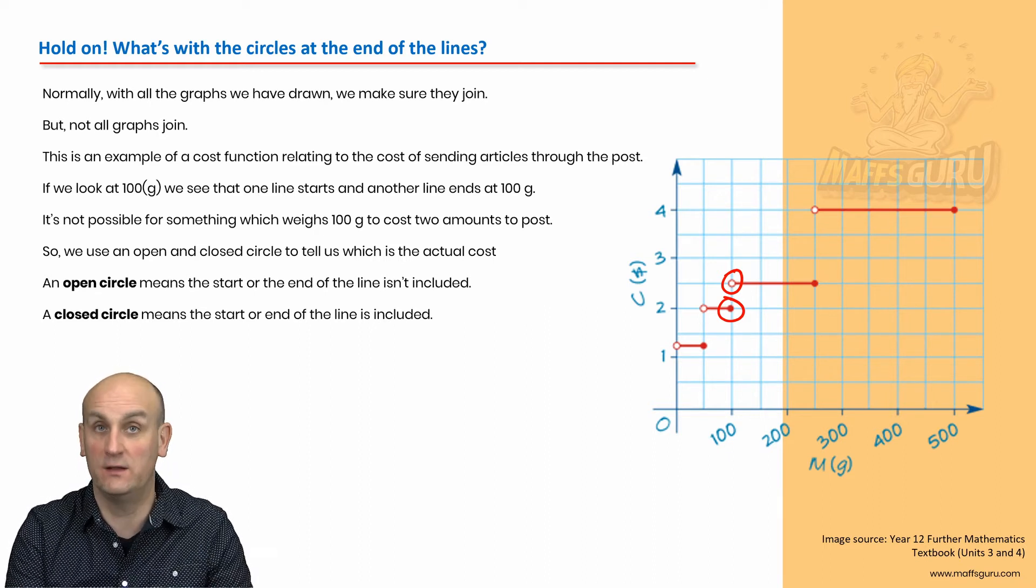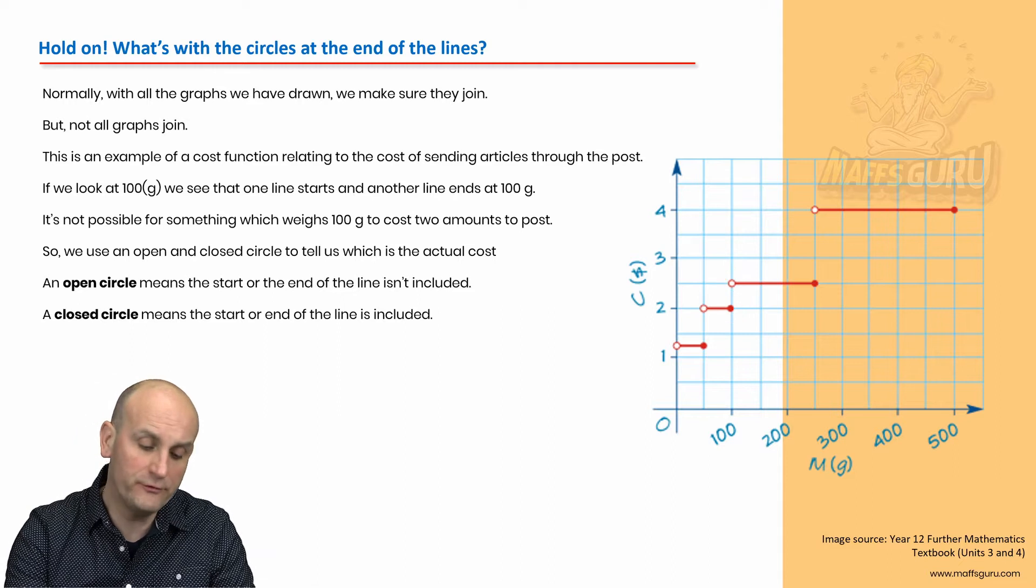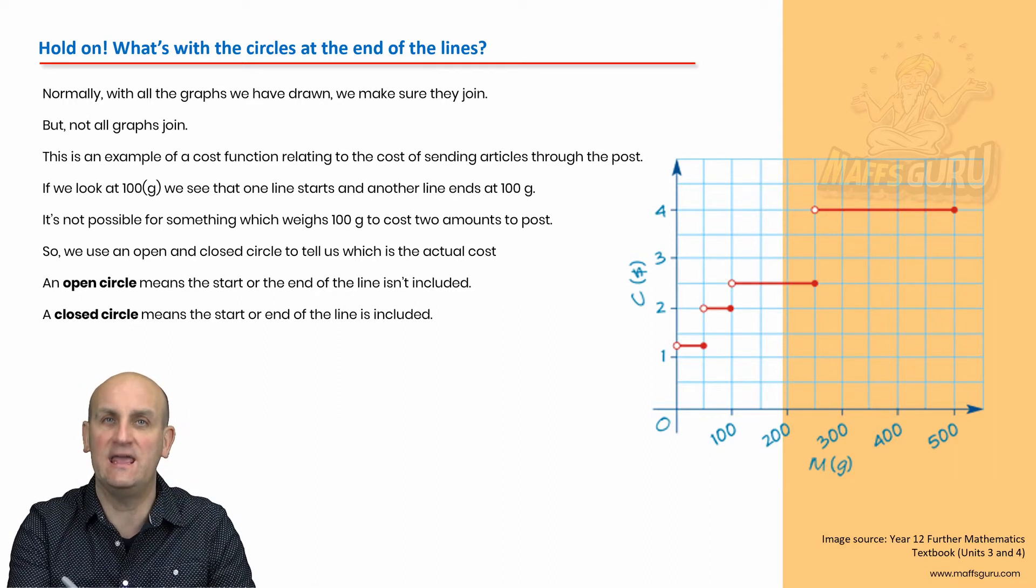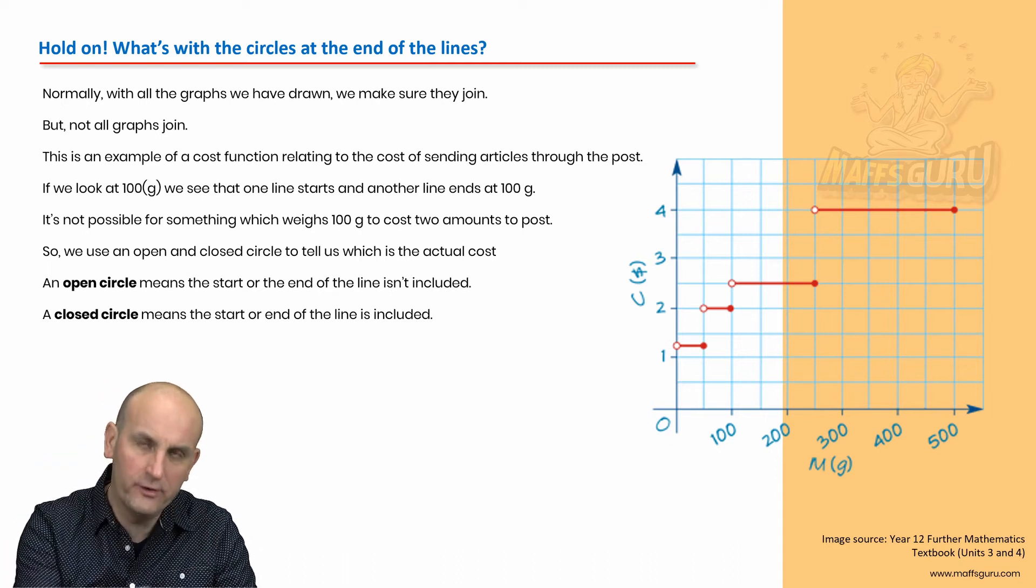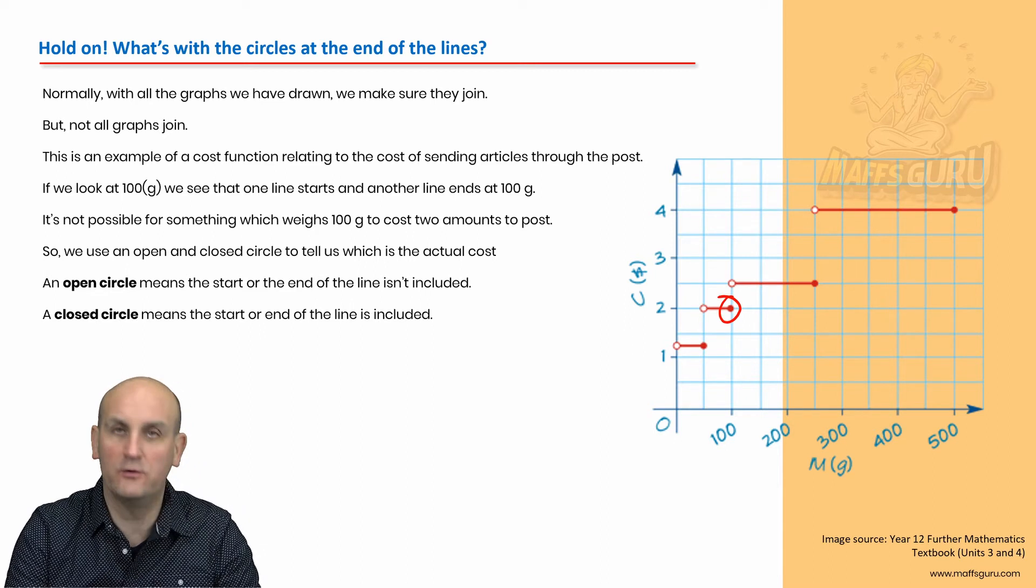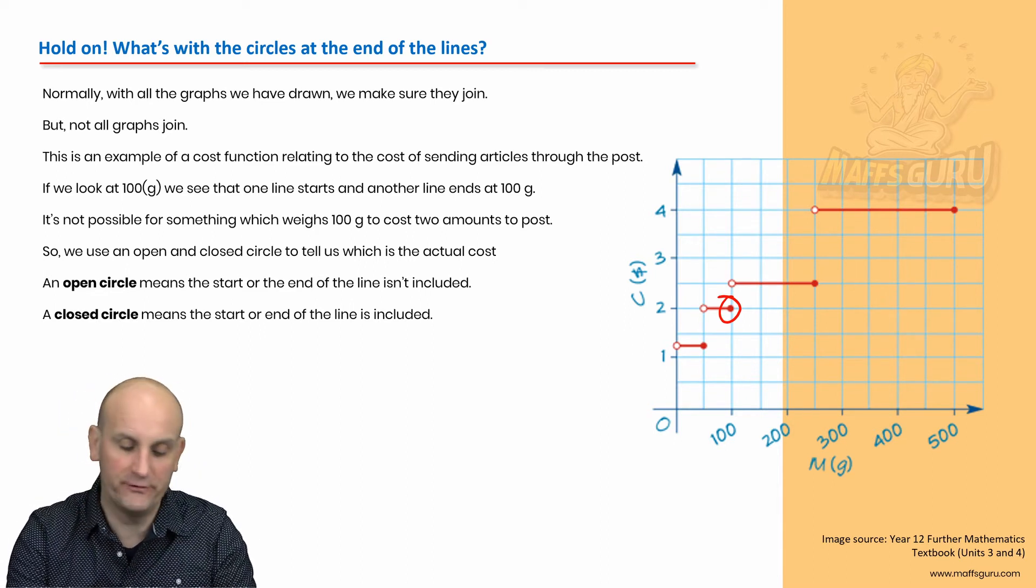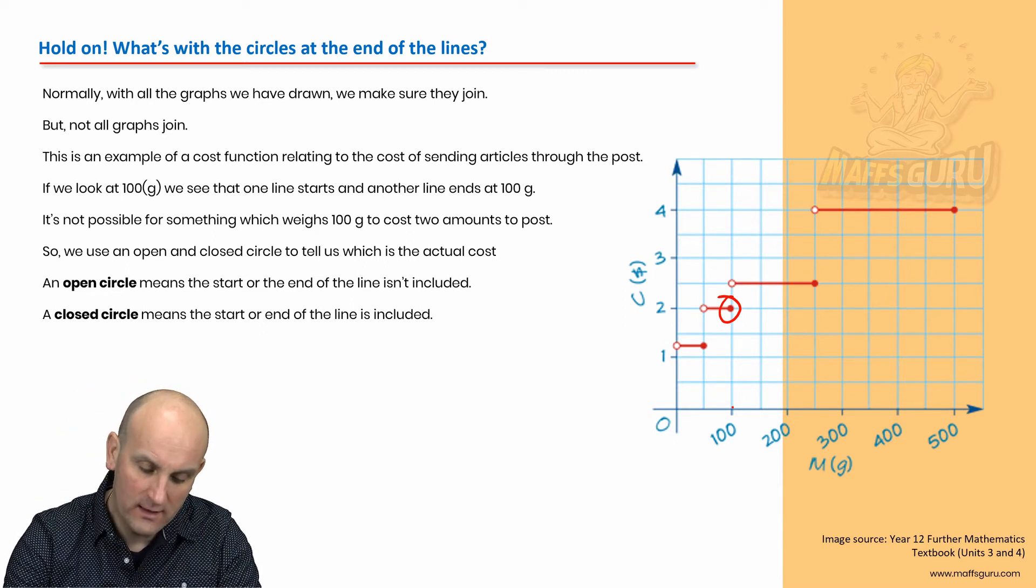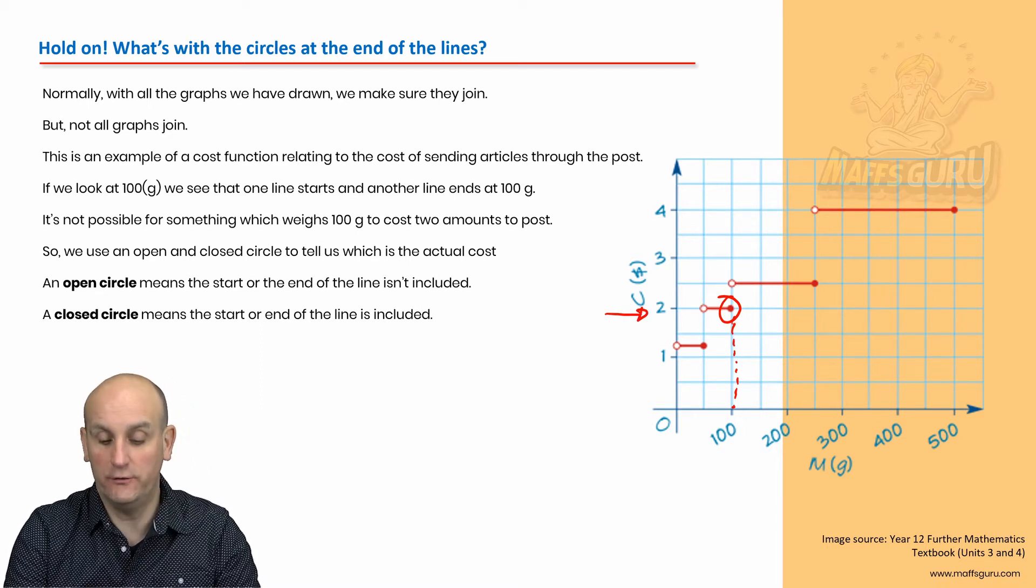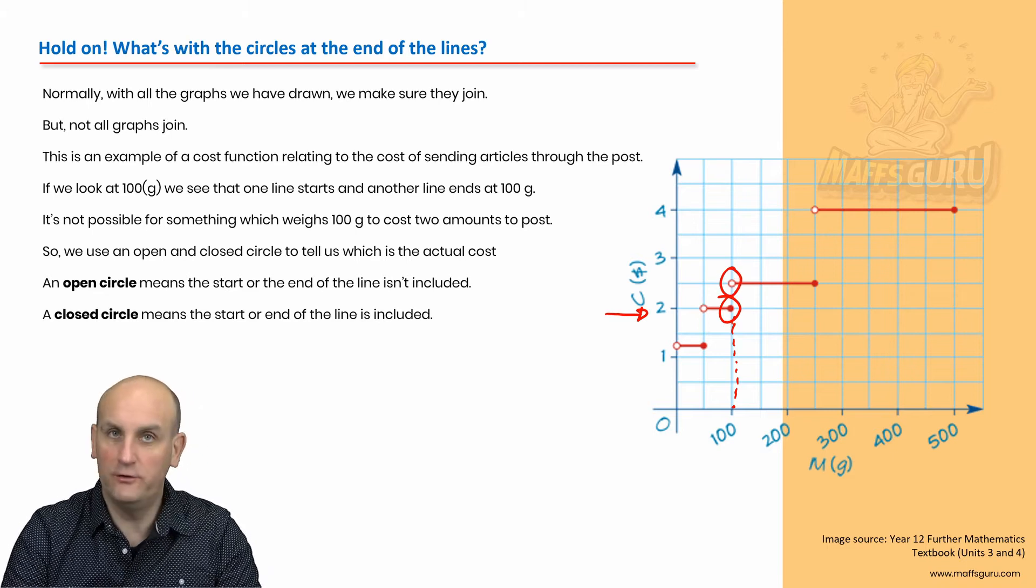$2 or $2.50. It doesn't make any sense. How, with it being 100 grams, are they going to charge me two things? So, believe it or not, we use this idea of dots to say, hey, this is the cost, and not this one. Whenever I have a closed circle, that is the cost. So in that situation, if I had 100 grams, I would only be charged the $2.00. Not $2.50.